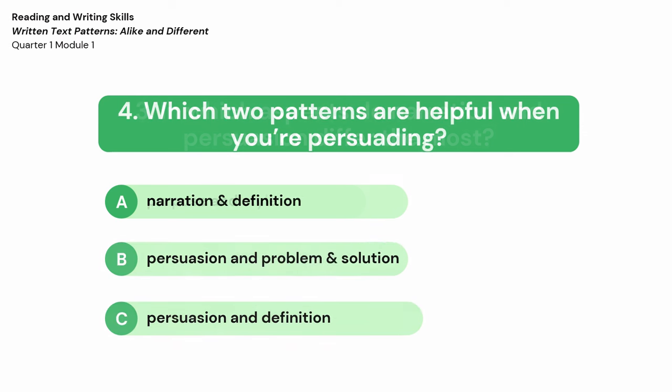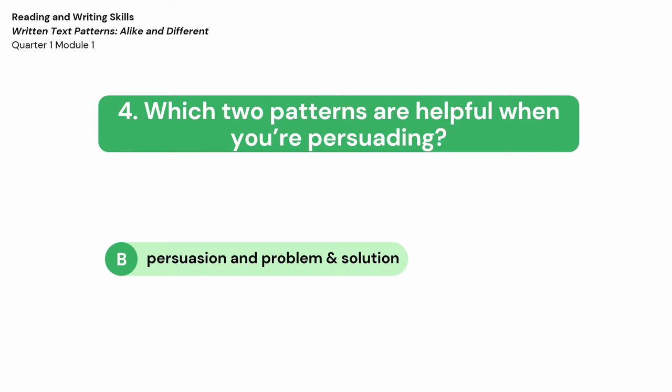Number 4: Which two patterns are helpful when you're persuading? A. Narration and definition. B. Persuasion and problem and solution. C. Persuasion and definition. The correct answer is B — persuasion and problem and solution.